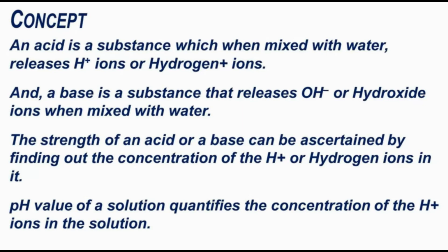The strength of an acid or base can be ascertained by finding out the concentration of H⁺ ions in it. The pH value of a solution quantifies the concentration of H⁺ ions in the solution. We have conducted a test of pH of HCl, acetic acid, NaOH, and copper sulfate solutions. By observing these values, we have to say whether it is a strong or weak acid or base.